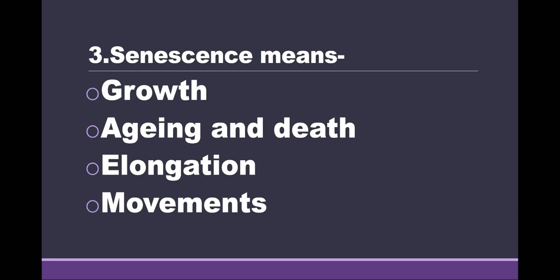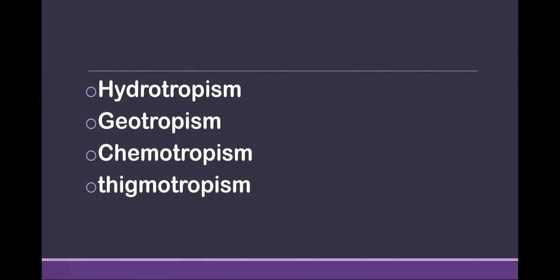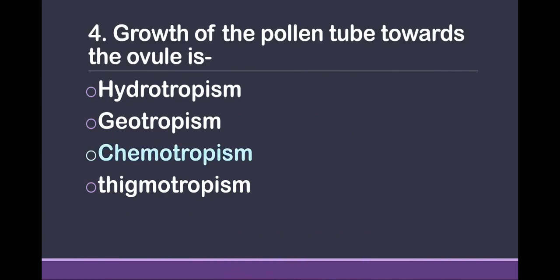Question 3: Senescence means — options are: first, growth; second, aging and death; third, elongation; and fourth, movements. The answer is aging and death.